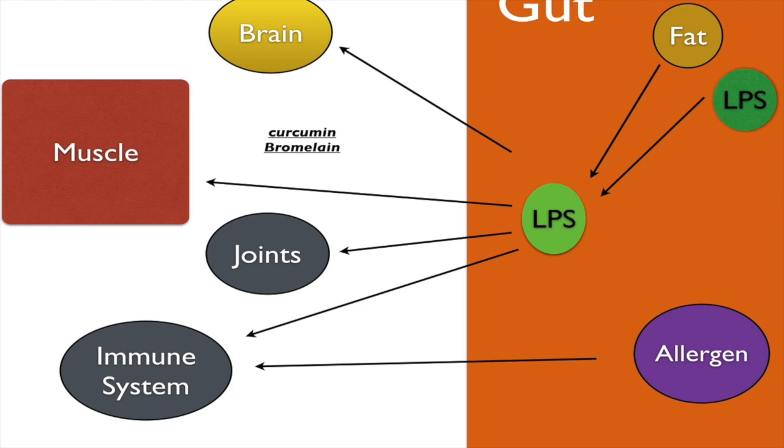And we're going to use other things like curcumin and bromelain to work right at the organ systems to help the joints, to help the muscles, and also to work with glutamine to keep the digestive tract from allowing these compounds to pass.